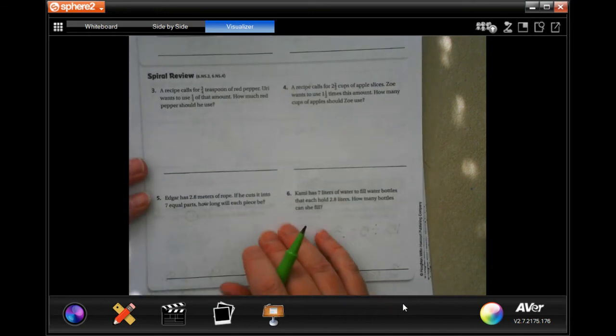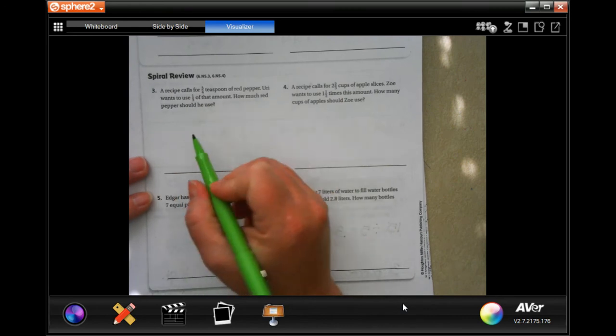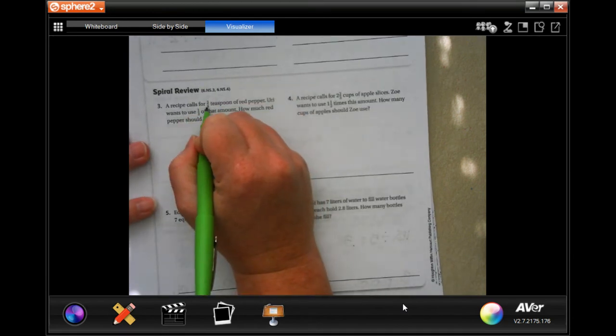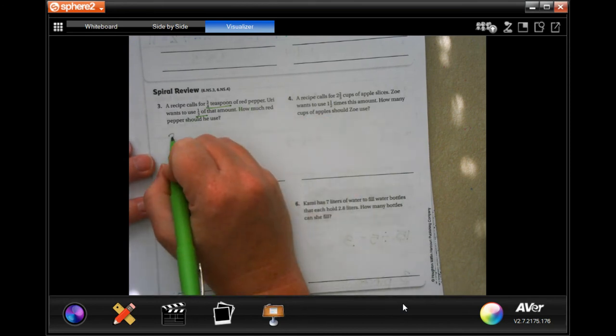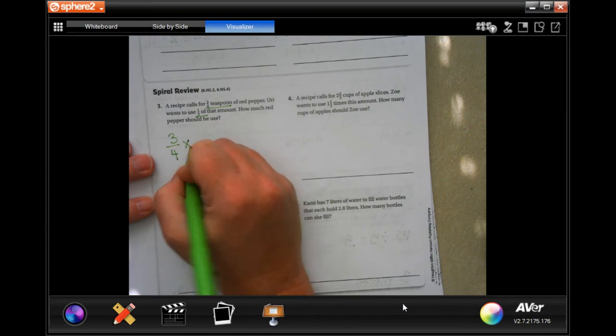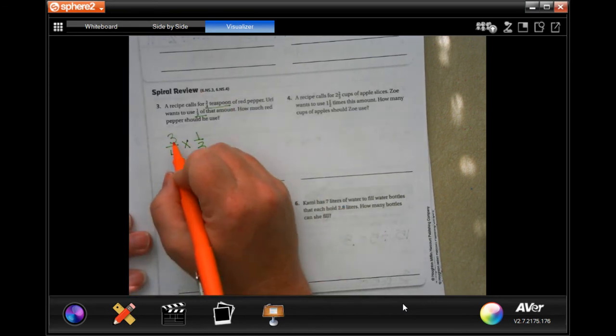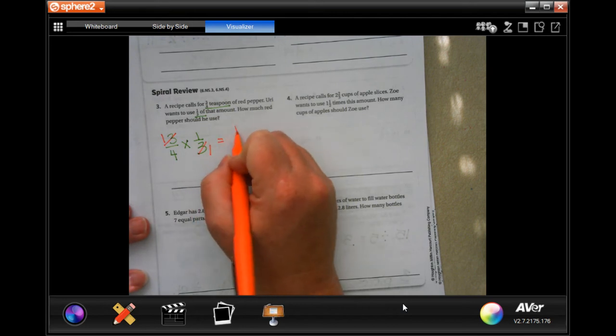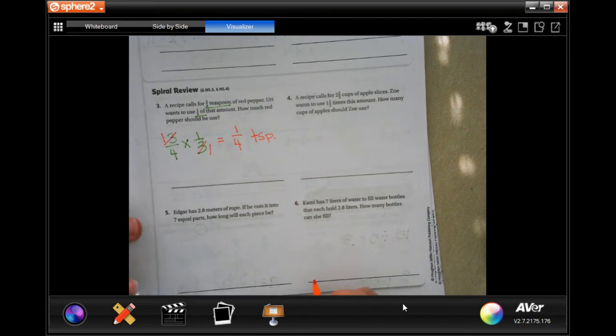The spiral review says a recipe calls for 3 quarters teaspoon of red pepper. You want to use a third of that amount. How much red pepper should he use? So it says 3 quarter teaspoon and 1 third of. We're going to start with our 3 quarters. And of that we're going to use a third. So I like when we have same numbers because we could cross them out and put a 1, 1 fourth teaspoon.